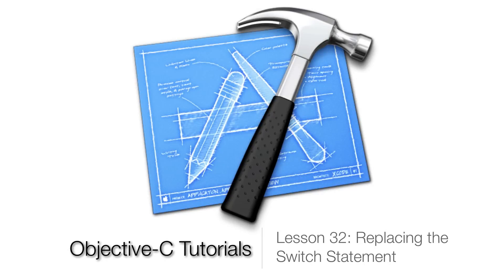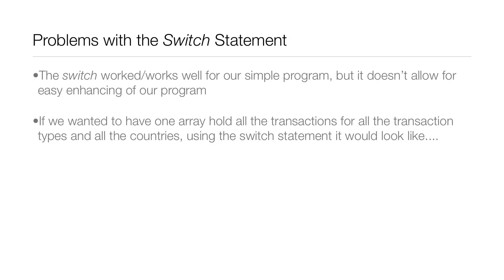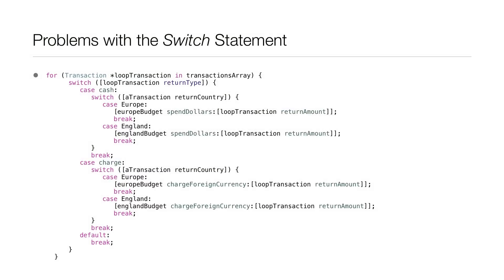Welcome to Objective-C lesson 32 on replacing the switch statement. We did add the switch statement a few lessons back, and it worked well for our simple program, but it doesn't allow for easy enhancement. For example, if we want one array holding all transactions for all types and countries, the switch statement turns into a convoluted mess. Switch statements get very complicated once you start adding more and more cases, especially switches inside cases.